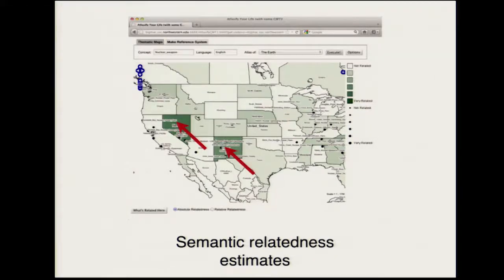So, for example, these states here had a much higher relatedness value to nuclear weapons than, for instance, Alabama over here.